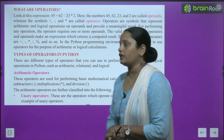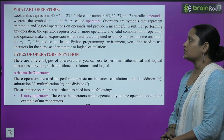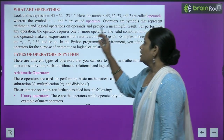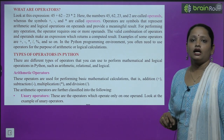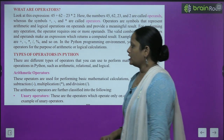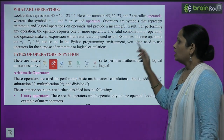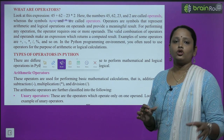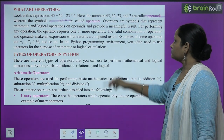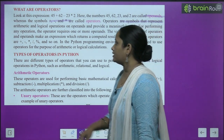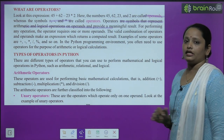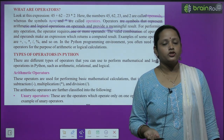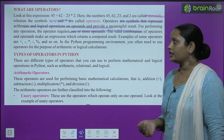Now let's move on to what are operators. Look at this expression: 45 plus 62 minus 23 multiply by 2. Here the numbers 45, 62, 23, and 2 are called operands. Yeh saare numbers ko operands kaha jata hai. Whereas the symbols plus, minus and multiply are called operators. Jitne bhi symbols hote hain unhe operators kaha jata hai. For performing any operation, the operators require one or more operands.